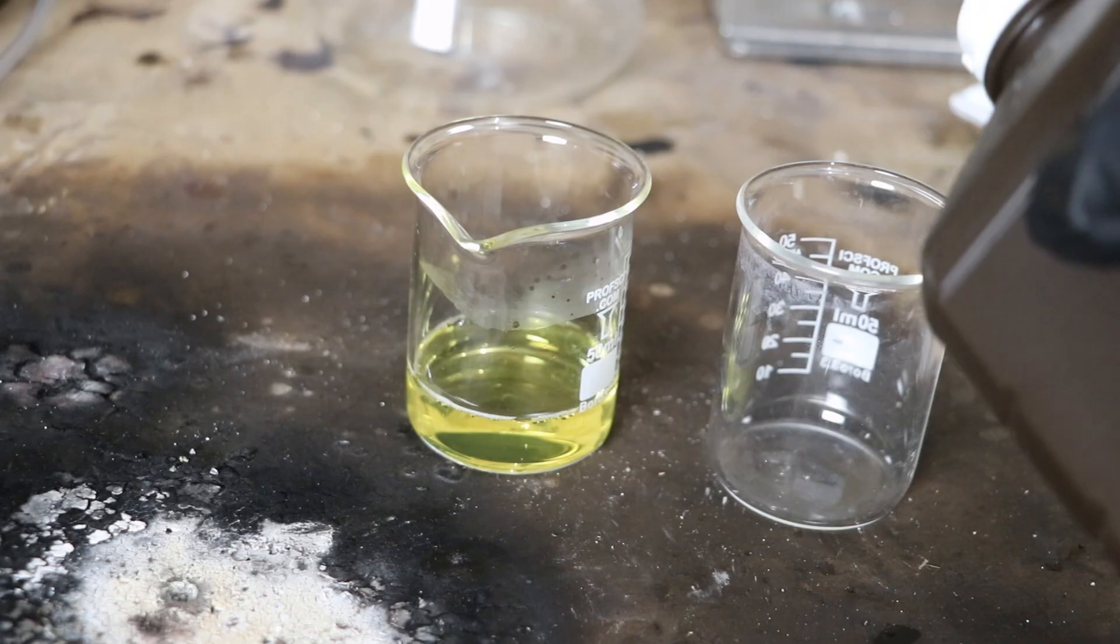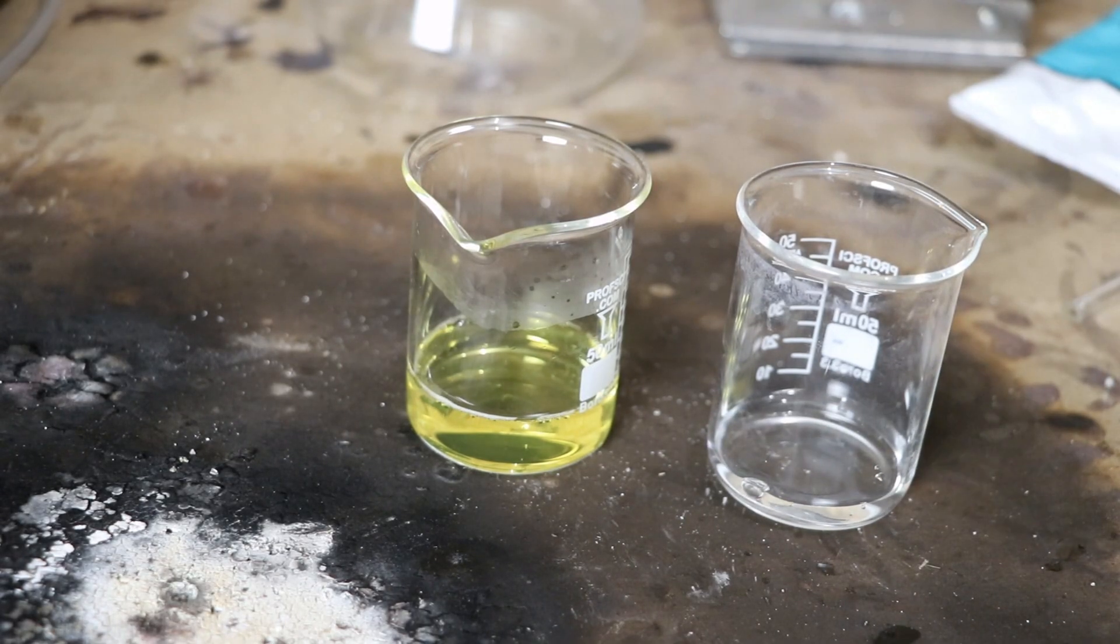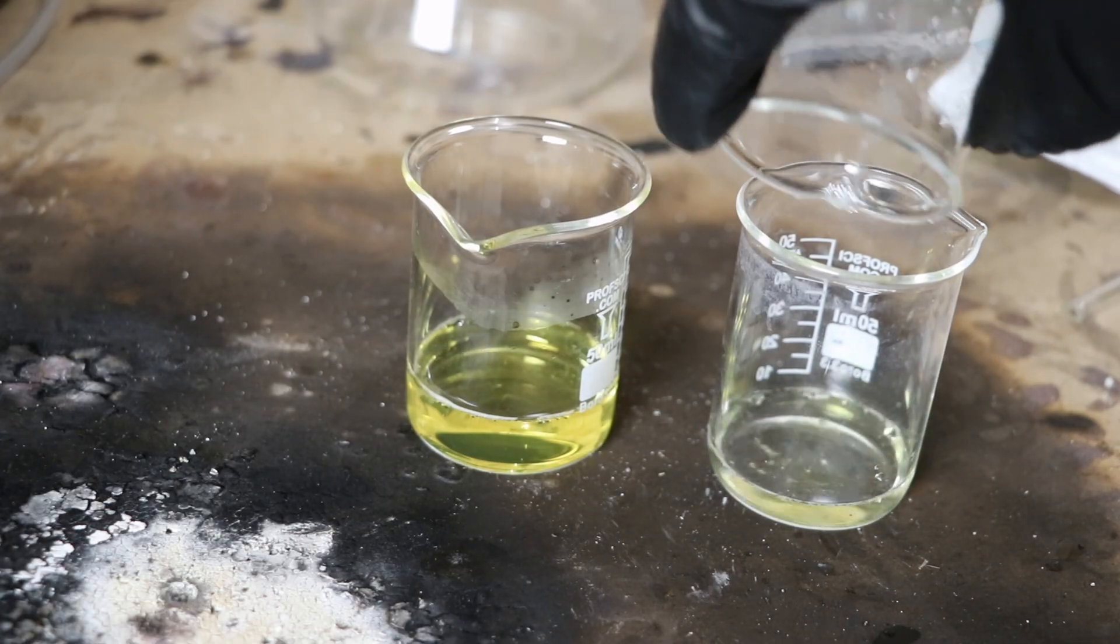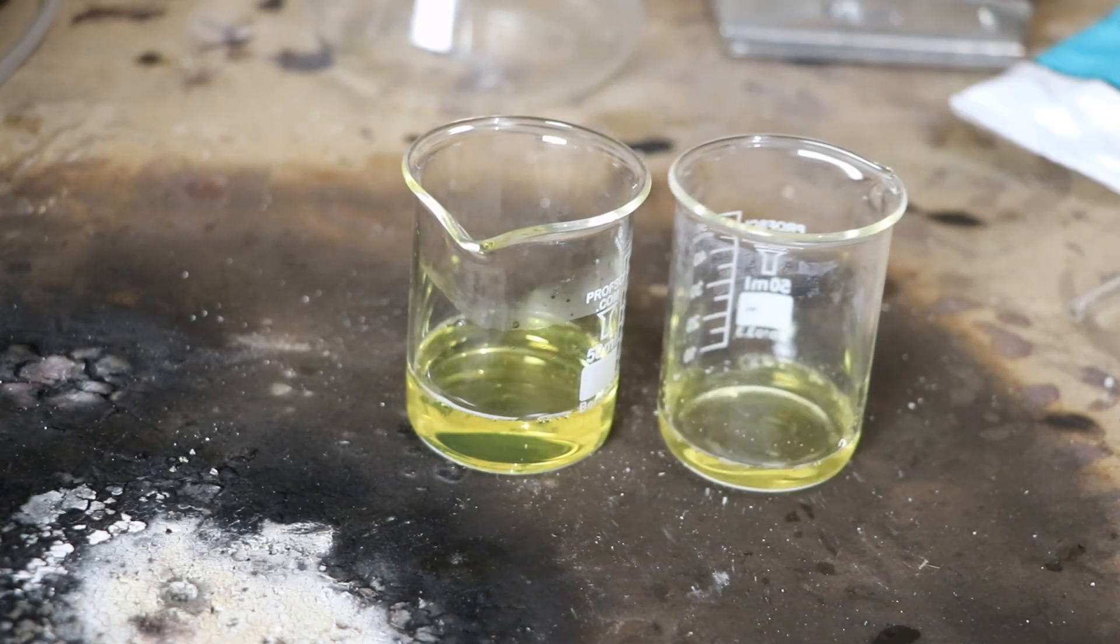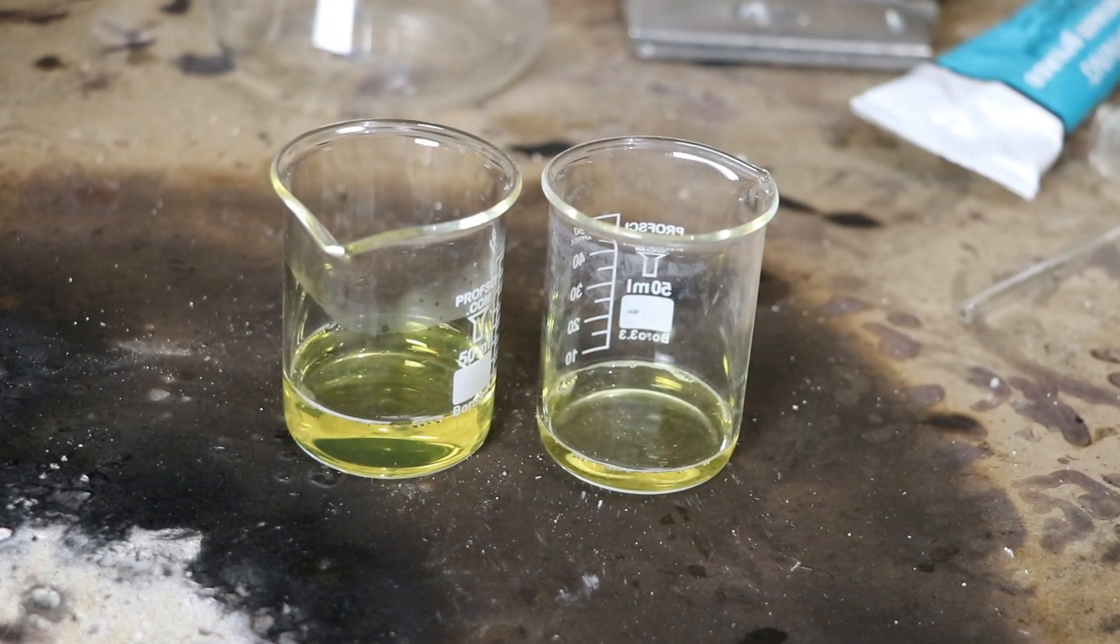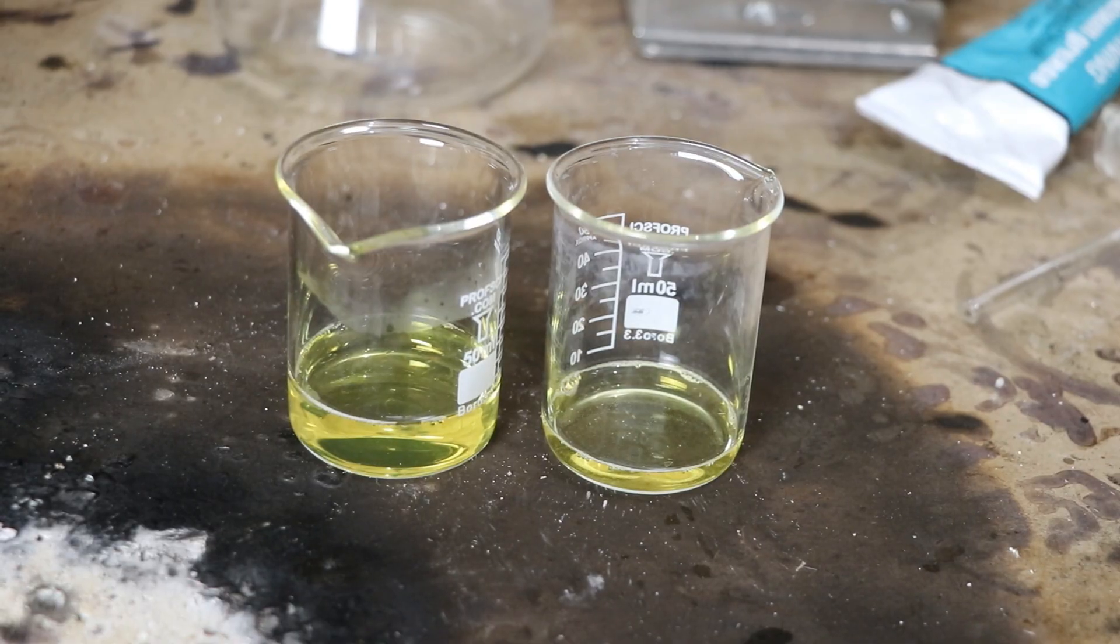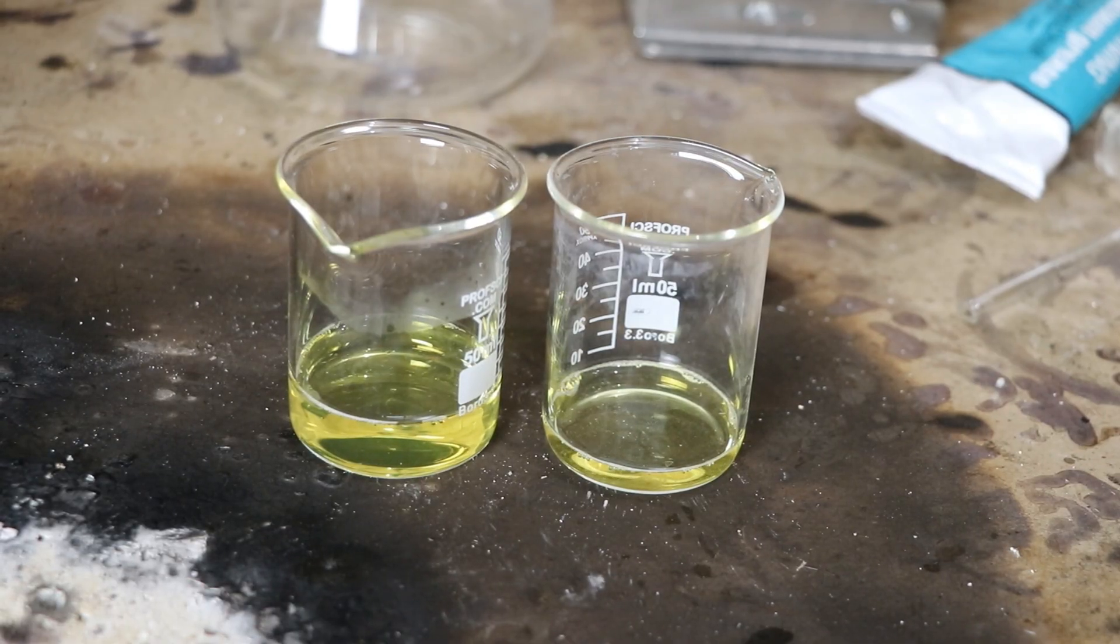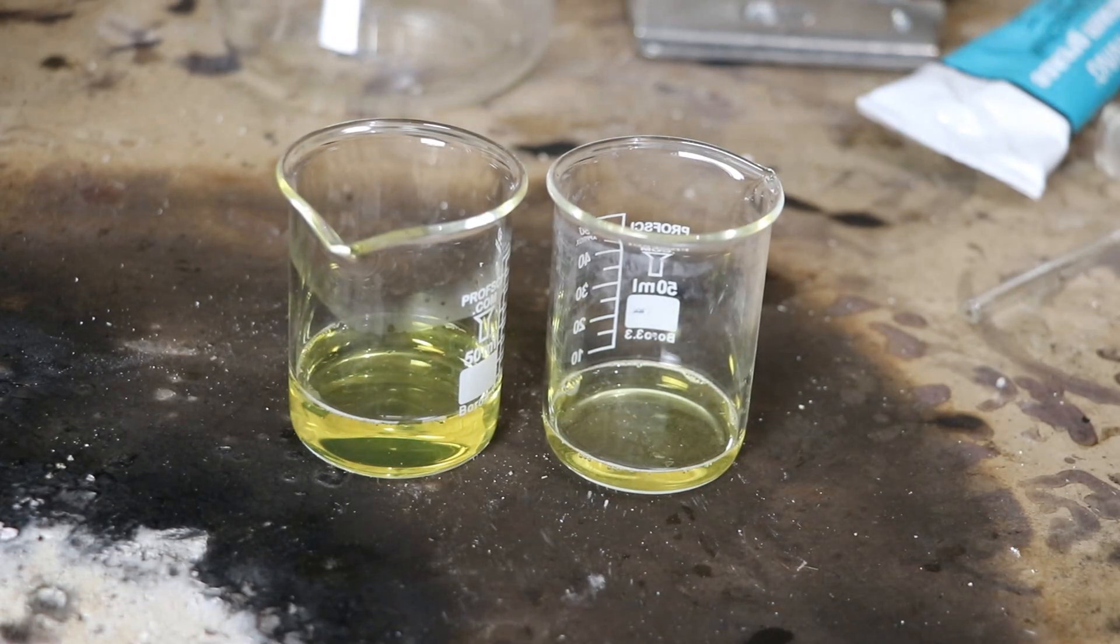So here's some three percent drugstore peroxide. Let's do the same thing to it. I got a little bit left here. Okay. Same color change. That one's not foaming up either. Okay. So that means there's something wrong with my test. Maybe the peroxide's just not strong enough. Uh, I'll go break open an alkaline battery. Let's use manganese dioxide.